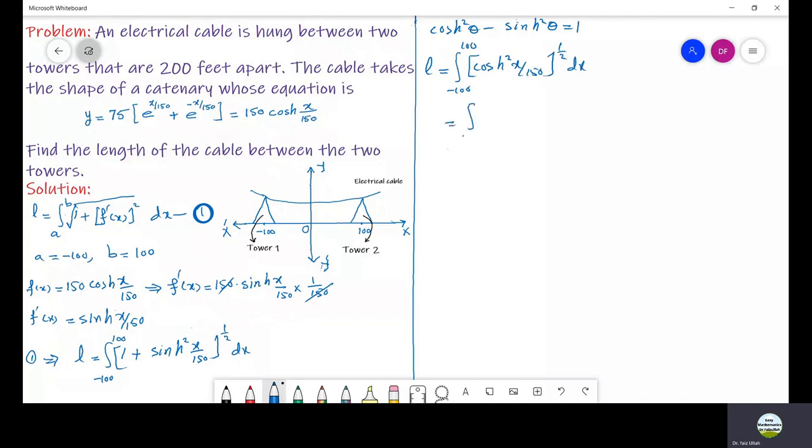This can be simplified as integration from minus 100 to 100 of cosh(x/150) dx. If we integrate it we get sinh(x/150) divided by 1 over 150 and the limits are from minus 100 to 100.